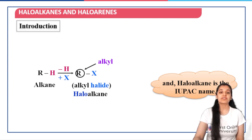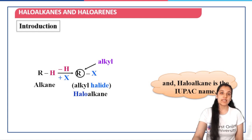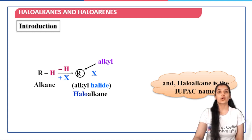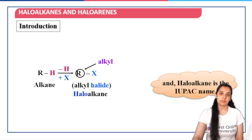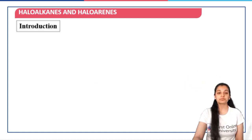For example, if we have CH3CH2Cl — when we call it ethyl chloride, that is the common name, but when we call it chloroethane, it is the IUPAC name. I hope the difference is clear to you.